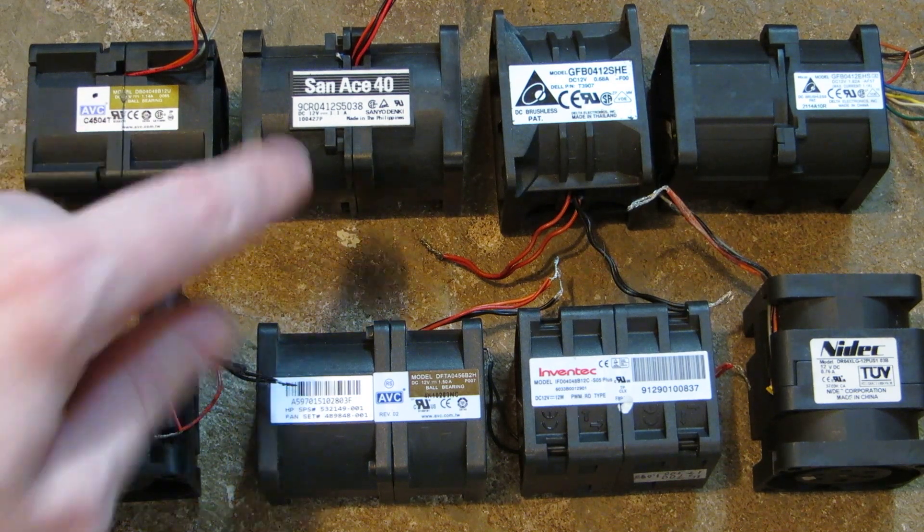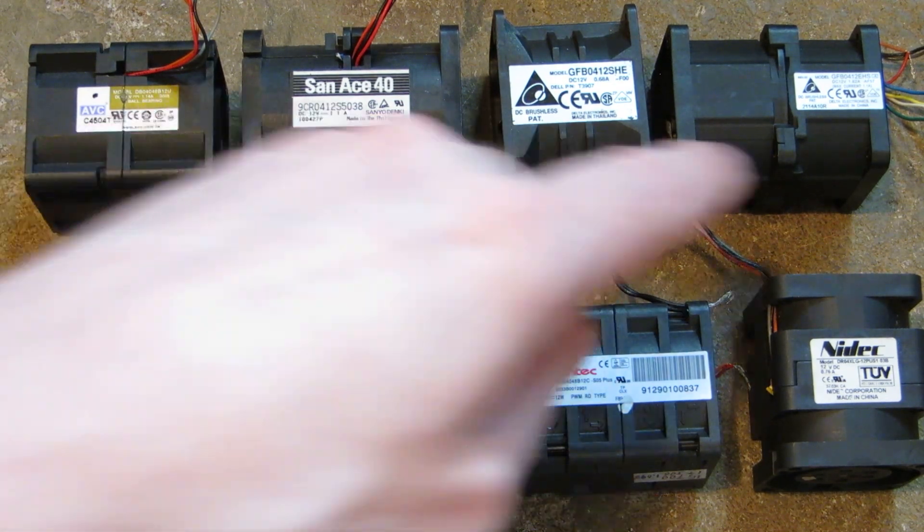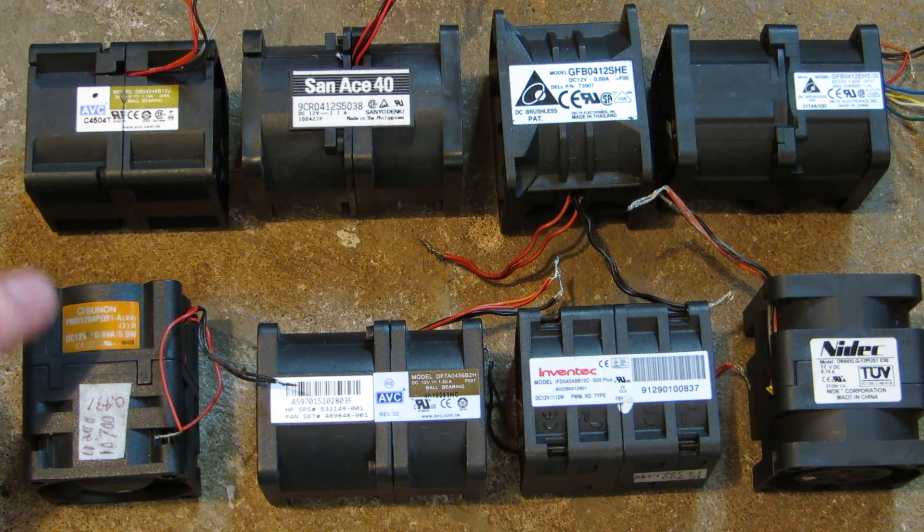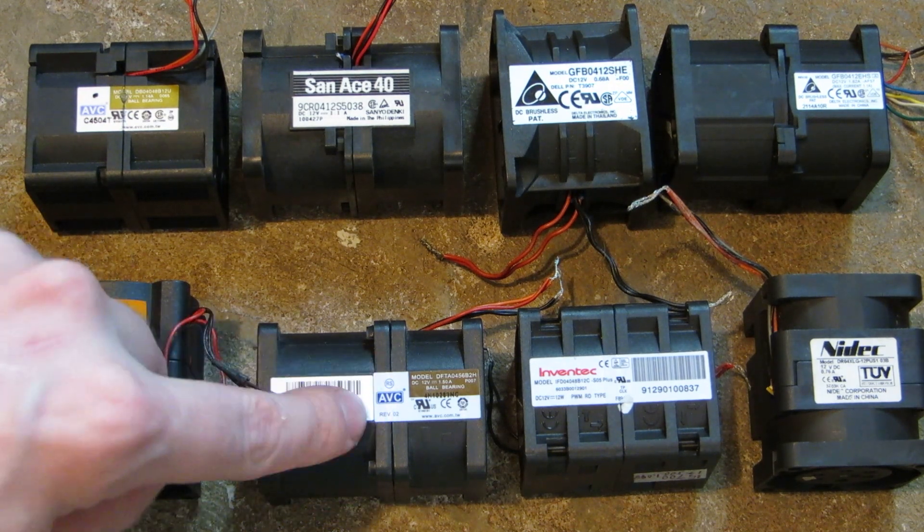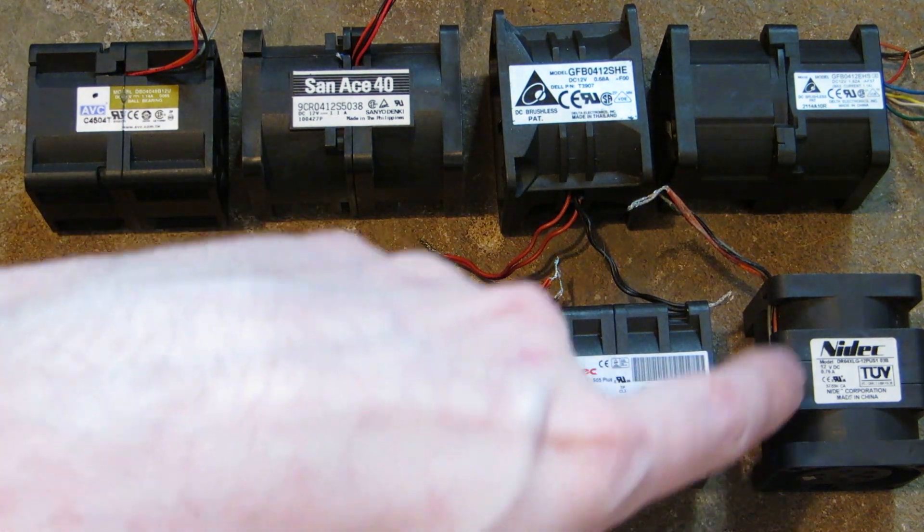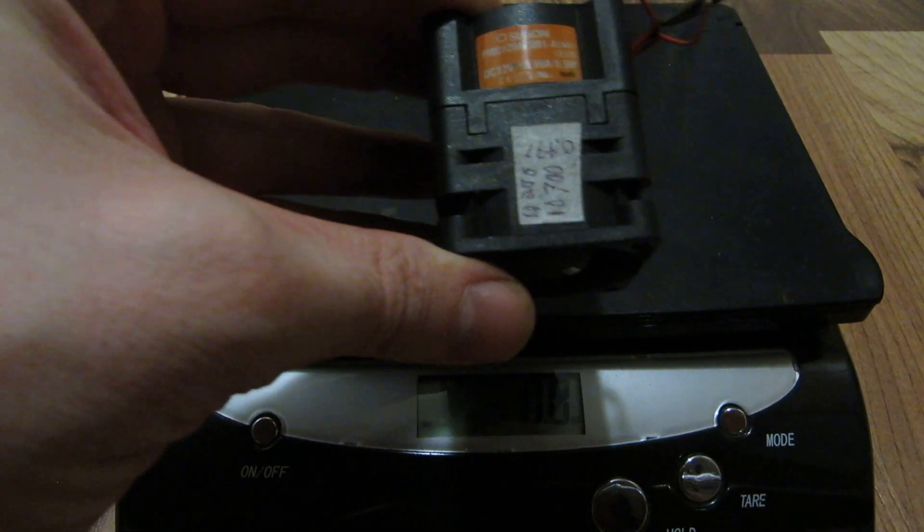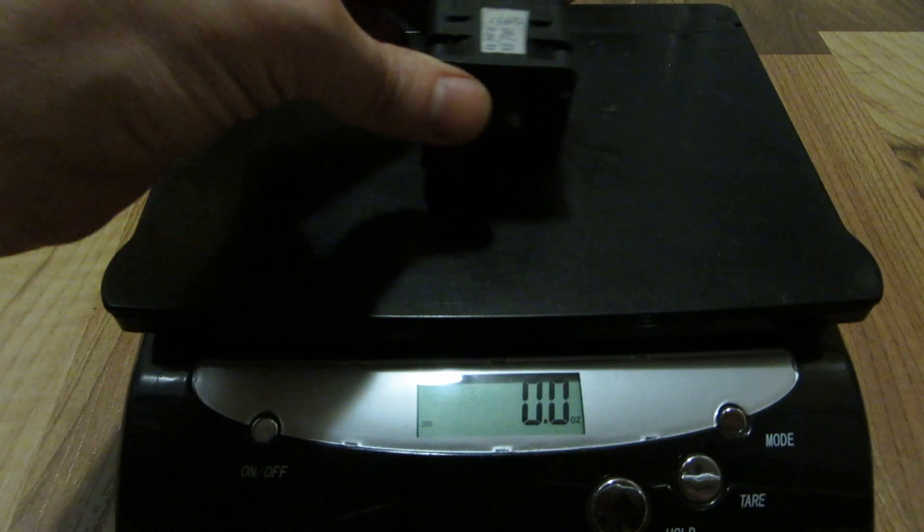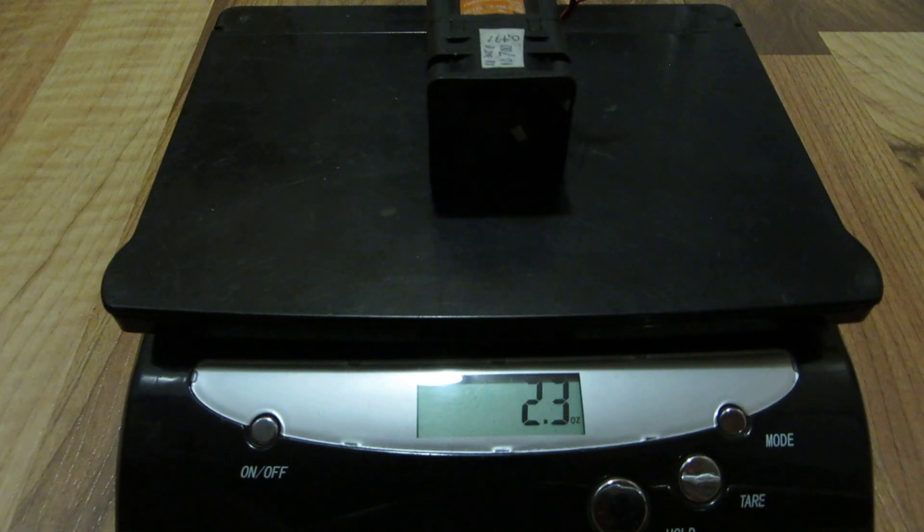You've got an AVC, Sanease 40, a Delta, actually two Deltas, a Sunon, another AVC, an Invitec, and a Nidec. The push-pull Sunon, 0.49 amps, 2.3 ounces. Right up first is the Sunon at 0.49 amps.